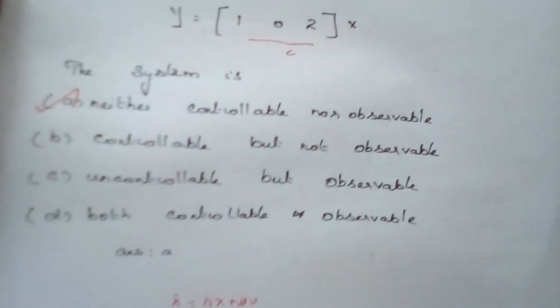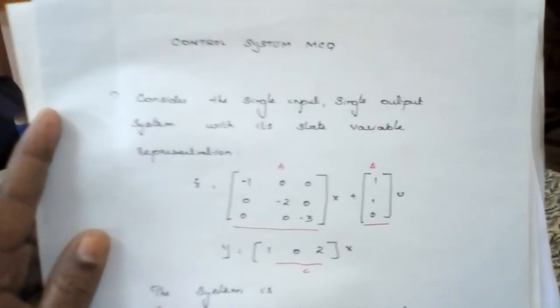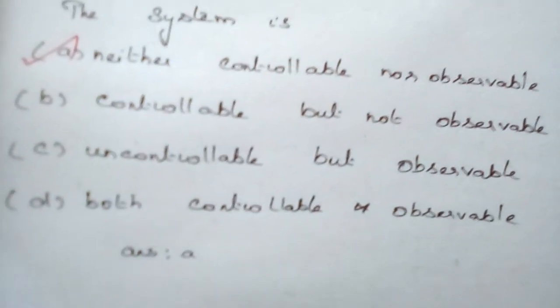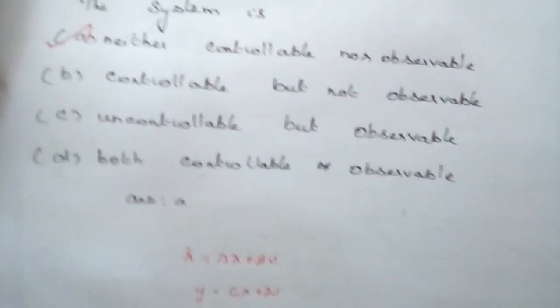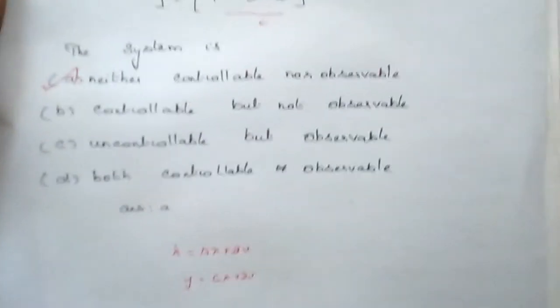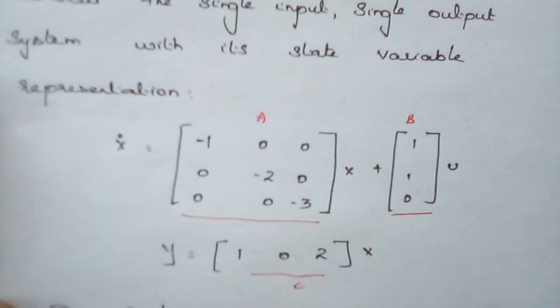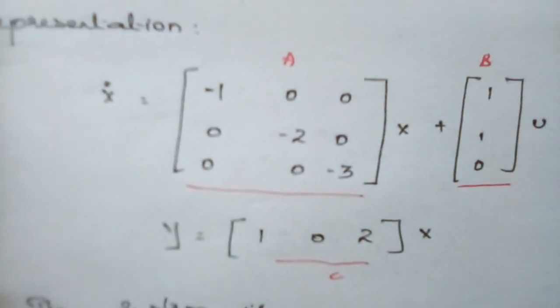Such MCQ questions can be asked in GATE, IES, UPSC examinations, and other examinations you are preparing for. This type of problem takes only 2 to 3 minutes if you are thorough with the formulas for controllability and observability as well as matrix calculations. If you like this channel, please like, share, and subscribe. Thank you.